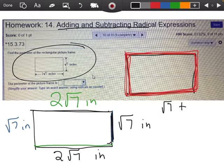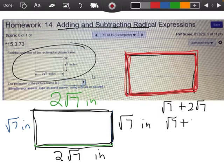So square root of 7 plus, and I'm going to go clockwise, so 2 square roots of 7 plus another square root of 7 plus another 2 square roots of 7.